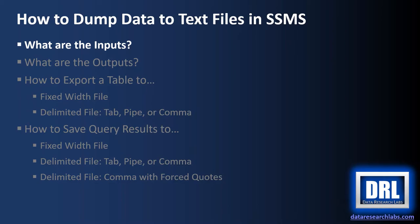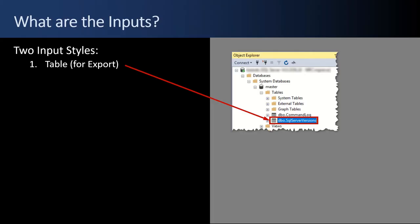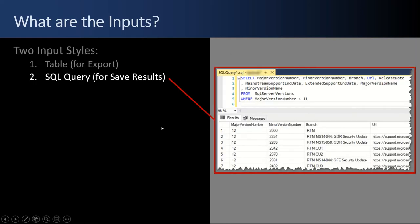First up, what are the inputs? There are two input styles. The first is to export a table's contents out — there's the database, the table list, and then the specific tables that you can export out to a text file. The second is to write a SQL query and, after you execute it, right-click the results and save those results out as various text file formats.